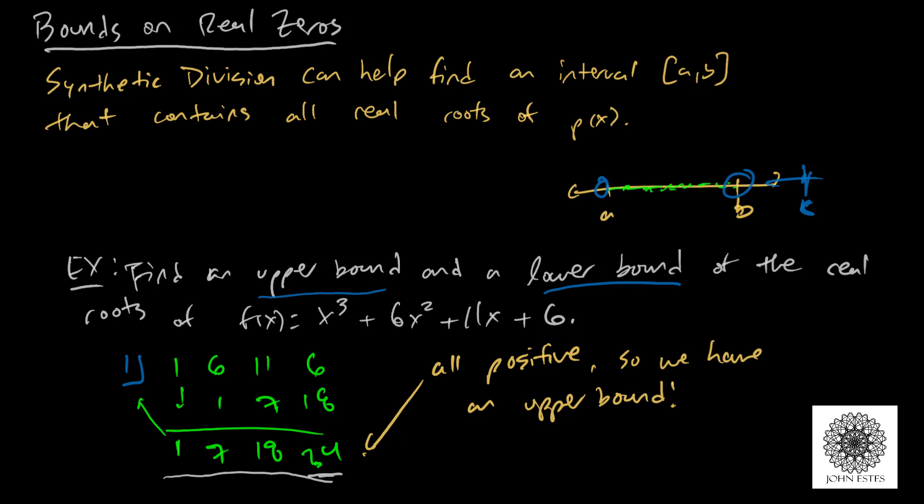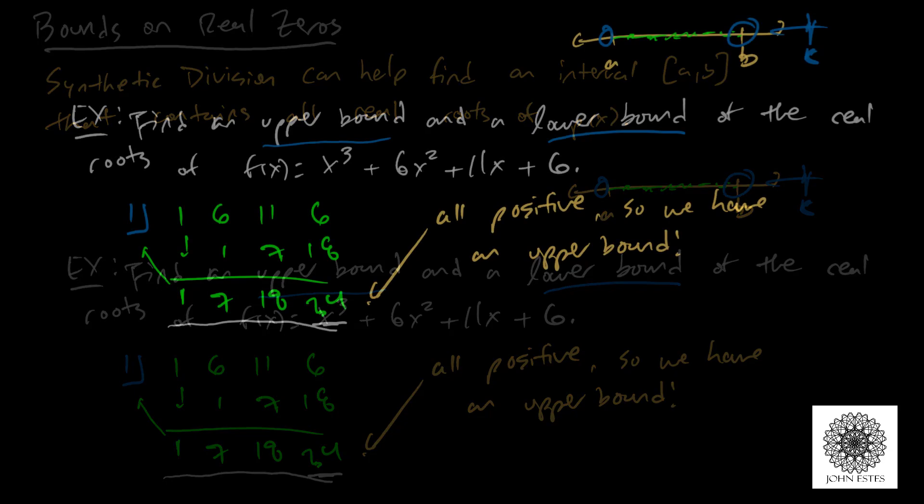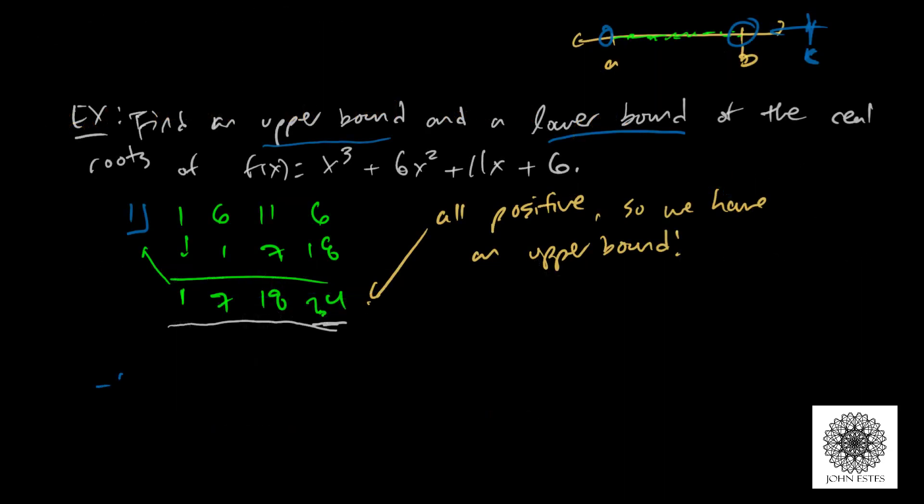What about a lower bound? What happens when you find a lower bound? Let me show you an example of that. This time we're going to test negative 6. I bring down the 1. 1 times negative 6 is negative 6. Add those to get 0.